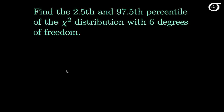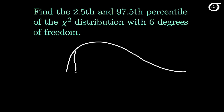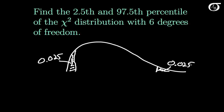Our chi-square distribution with 6 degrees of freedom looks something like this. The 2½ percentile is the value that yields an area to the left of 0.025, and the 97½ percentile is the value that yields an area to the left of 0.975 and an area to the right of 0.025. In my notation, we call this chi-square 0.025 — the chi-square value with 0.025 off to the right.